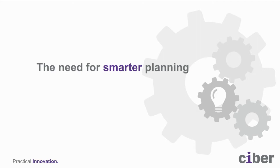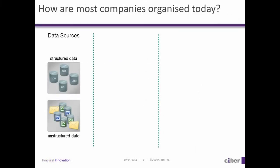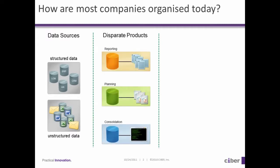Turning to our first topic: why do businesses need to plan smarter? How are most companies organised today? Often, planning information and data for planning applications is stored in a variety of structured and unstructured data sources. This could be in ERP, CRM or HR systems, combined with disparate spreadsheets and offline calculations that all form part of the planning process.